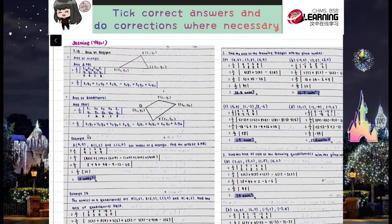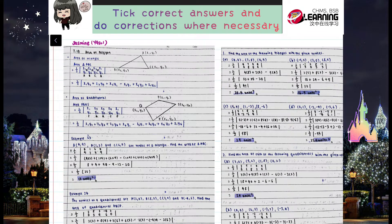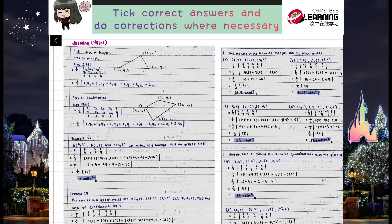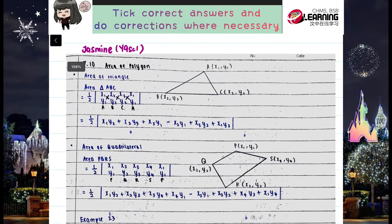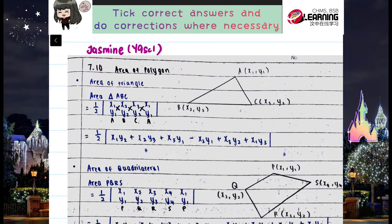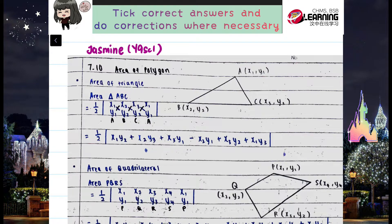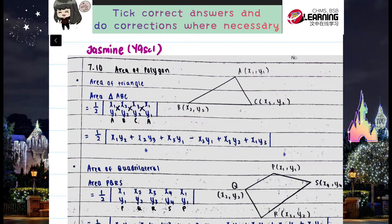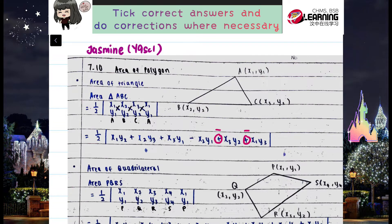Let's check out our previous lesson's work first. This is Jasmine's work from Year Nine Science One — let's check it together. For your case, please double check and compare your answer with Jasmine's. In 7.10 there is a little mistake: please double check your formula for the area of polygon or area of triangle.